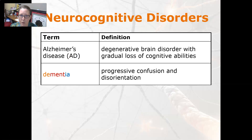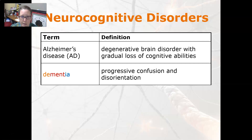Neurocognitive disorders: Alzheimer's disease is a degenerative brain disorder with gradual loss of cognitive abilities. It tends to affect females more, though both males and females can suffer from it. Dementia is progressive confusion and disorientation. Alzheimer's disease is a form of dementia.